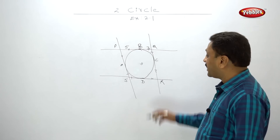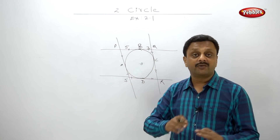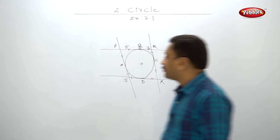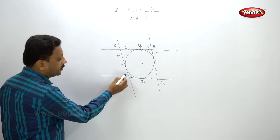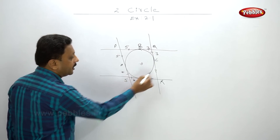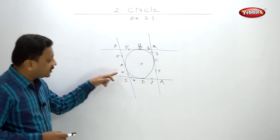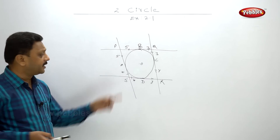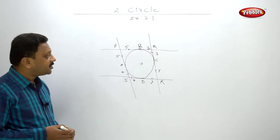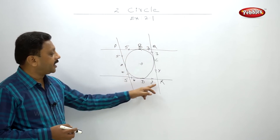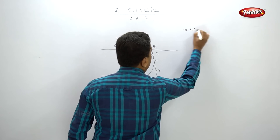Give names to the segments: PB equals 5 so PA equals 5, BQ equals 3 so QC equals 3, the next pair of tangent segments are X and X, and the last pair are Y and Y. Since it is a parallelogram, opposite sides are equal: 5 plus 3 must equal X plus Y, so X plus Y equals 8. Also, 5 plus X must equal 3 plus Y.